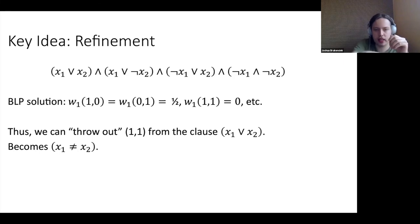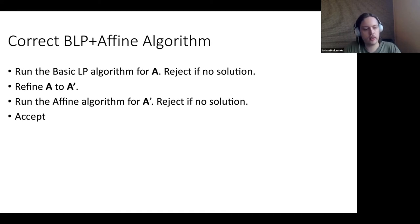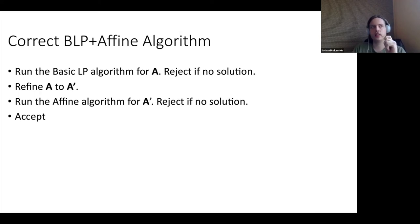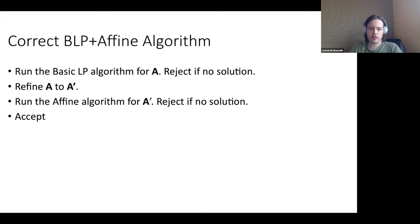If you run the affine algorithm on this refinement, it finds a contradiction and rejects — which is our general algorithm on the next slide. So our algorithm is: run the basic LP for A, reject if no solution; perform the refinement (throw out zero-weight assignments, with some subtle details about which things to throw out — needing weight zero for every solution, not just some); then run the affine algorithm on the refined problem and reject if no solution. This refinement idea is probably the key distinguishing factor of the algorithm in this paper versus the previous literature.